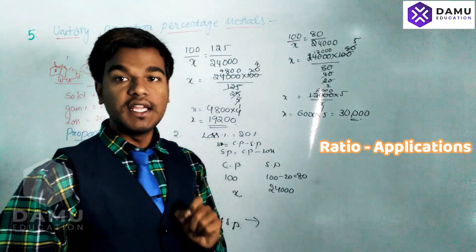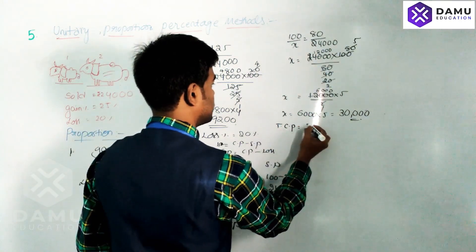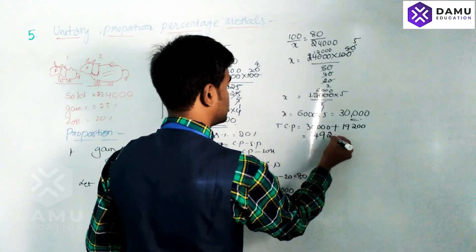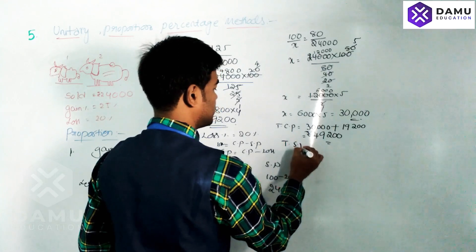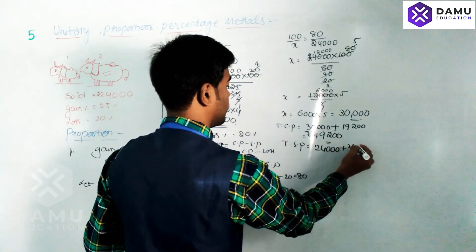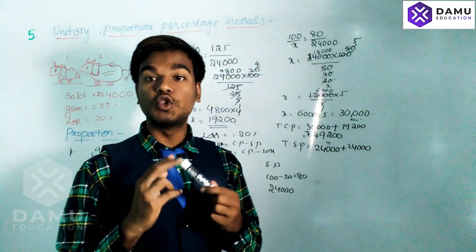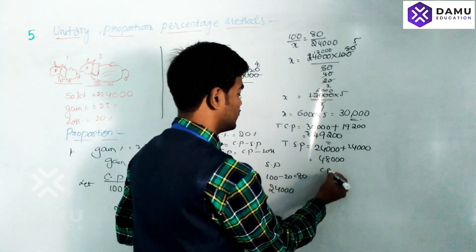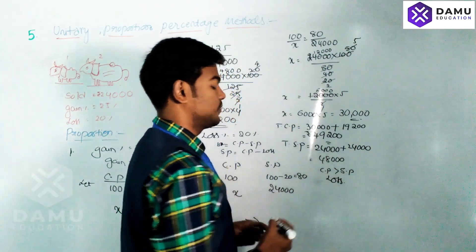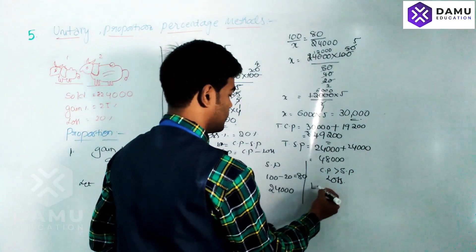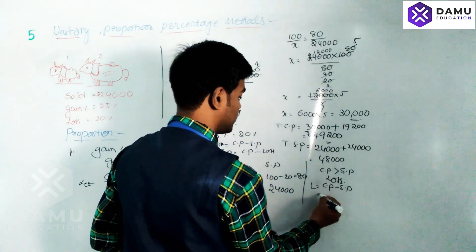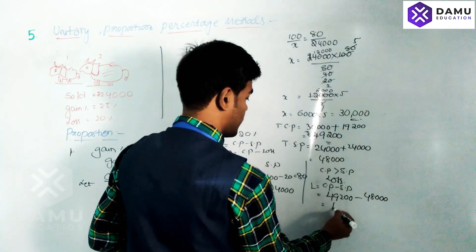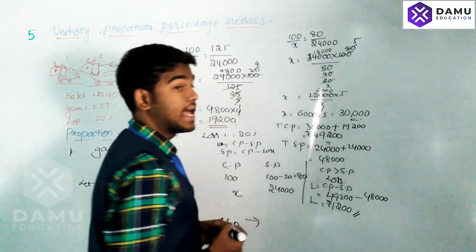Total cost price equals 30,000 plus 19,200, which is 49,200 rupees. Total selling price equals 24,000 plus 24,000, which is 48,000 rupees. Since cost price is greater than selling price, there is obviously a loss. Loss equals CP minus SP, which is 49,200 minus 48,000 equals 1,200 rupees.